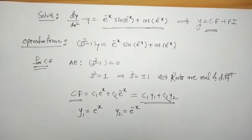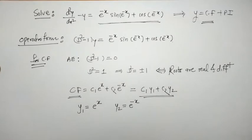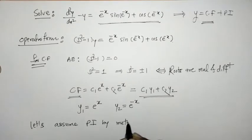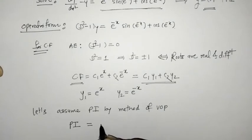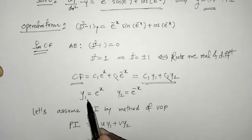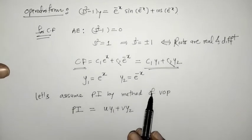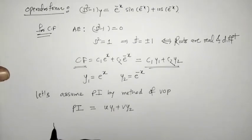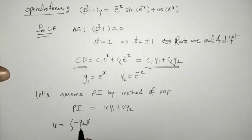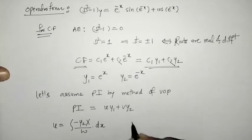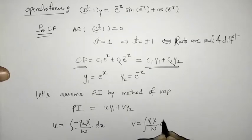Now we assume PI by the method of variation of parameters. PI is given by u*y1 + v*y2, where y1 and y2 come from CF. The value of u is the integral of (-y2 * X) / W with respect to x, and v is the integral of (y1 * X) / W.